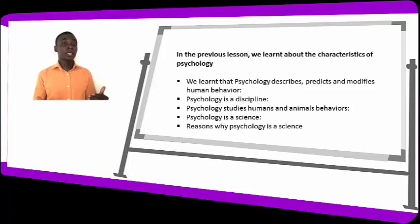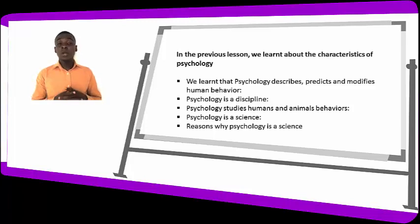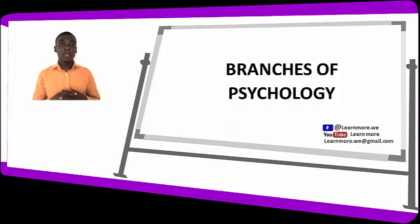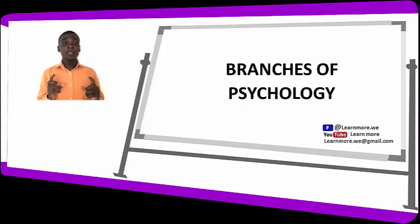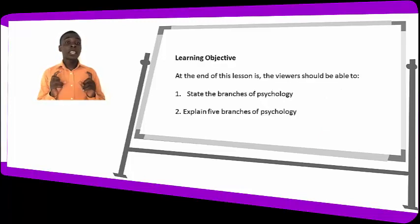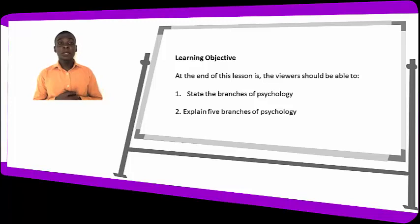If you haven't seen the last lessons, you can go to our channels on Facebook or YouTube and look for the characteristics of psychology and the introduction to psychology, where we looked at the origin of psychology and the Greek root words — psyche and logos. This is lesson three, and in this lesson we are looking at the branches of psychology. At the end of this lesson, you should be able to state and explain at least five branches of psychology.